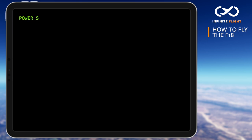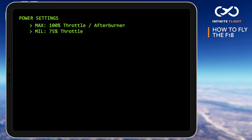In this tutorial, you may hear mill and max power referenced. Mill power is 75% throttle and is the threshold before the afterburner is lit. Max power will refer to 100% power with afterburner.